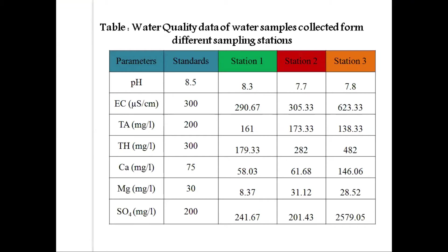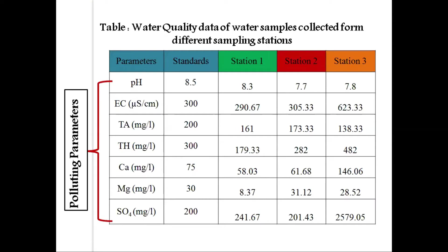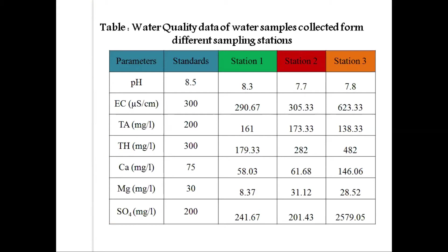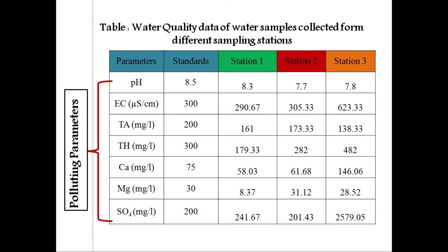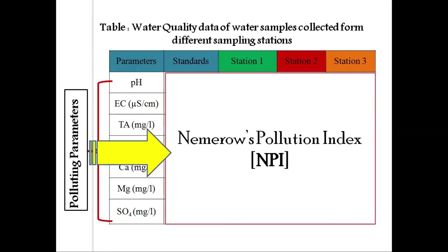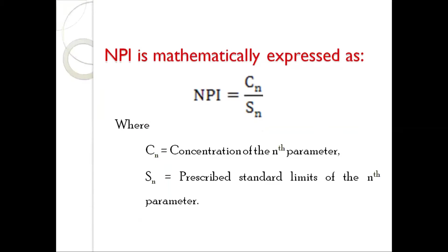In this study, the researcher is very much interested in finding or determining which individual parameters among all the parameters studied contribute significantly to the water quality deterioration. In such cases, the researcher will get the answer by implementing the Numerous Pollution Index.